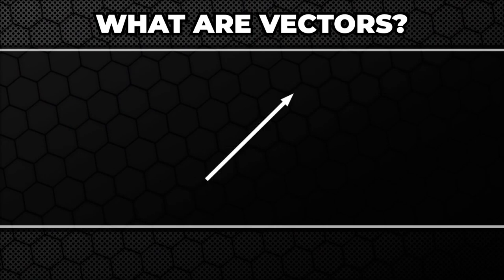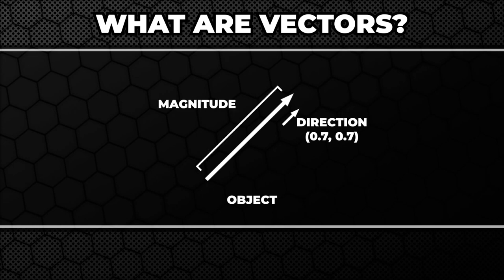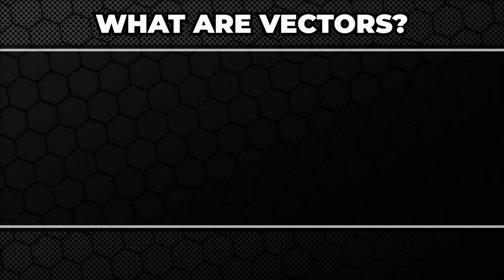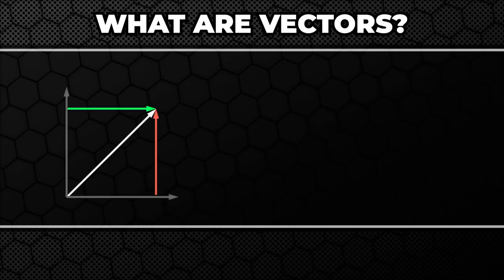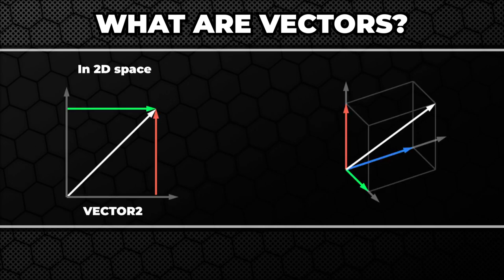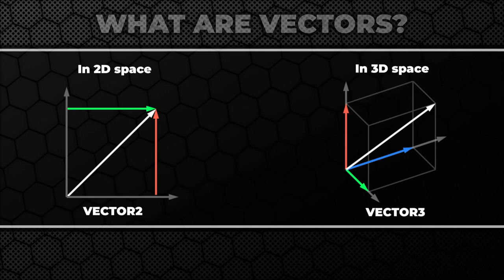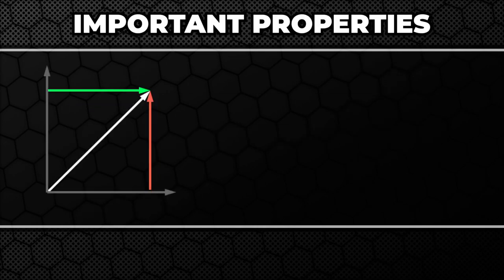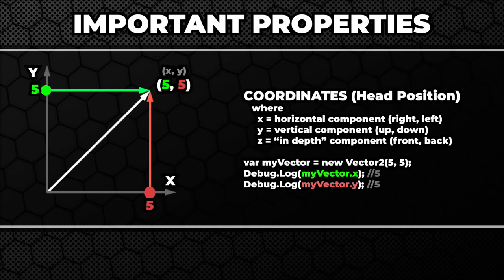A vector is a mathematical term used to describe an object consisting of direction and magnitude, which is nothing more than a fancy word for length. In Unity you will be working mainly with 2D vectors and 3D vectors, Vector2 and Vector3. Some of the most important information they consist of are a set of coordinates: x and y for Vector2, and x, y and z for Vector3.